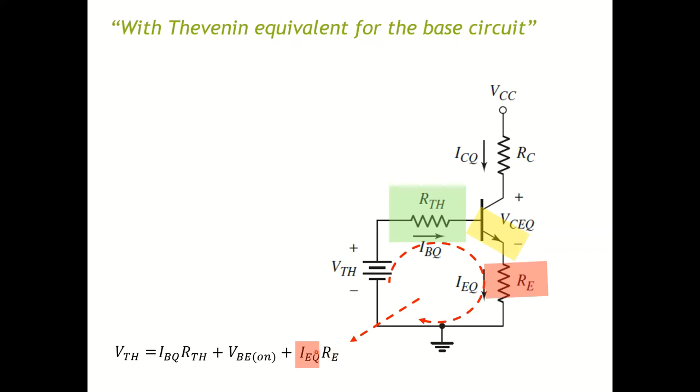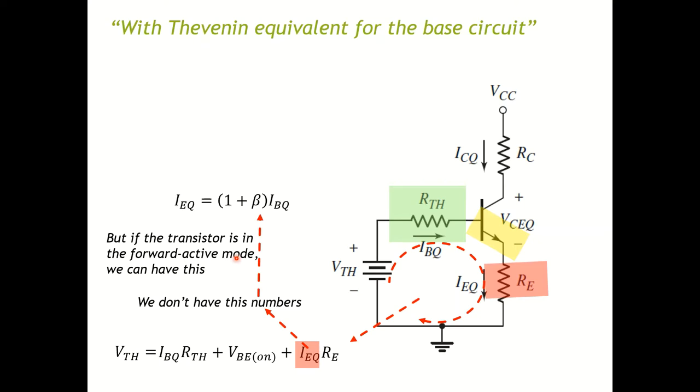So this value here, how do we find it? We actually do not have it right, we don't have this number yet. But if our transistor is in forward active mode, we can have this.